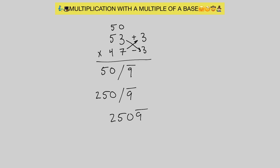To complete this, we use the formula all from 9 last from 10. We subtract 1 from 250 to get 249, and then 10 minus 9 gives us 1. So our final answer is 2,491. With all from 9 last from 10, if you have a single digit, that digit is your last from 10 — so 10 minus 9 gives us 1, and our final answer is 2,491.